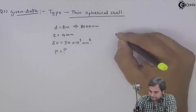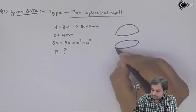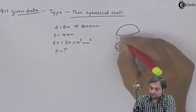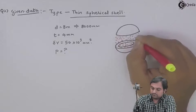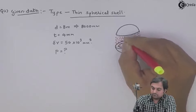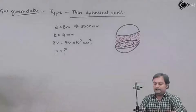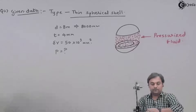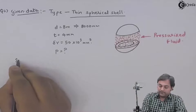As usual, we draw the spherical shell showing it breaking into two halves. Here we have a spherical shell filled with pressurized fluid, and we need to find the value of the internal pressure.